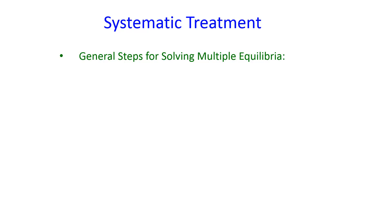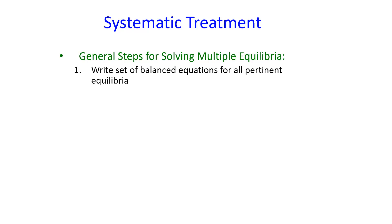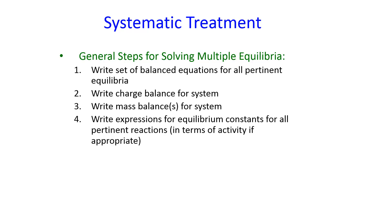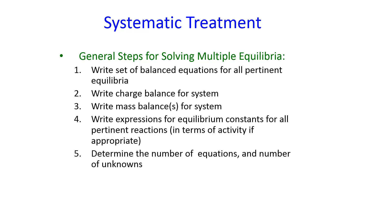So, back to our systematic treatment of equilibria: we've written balanced chemical equations, we've written a charge and a mass balance, and then the last step is to write expressions for the equilibrium constants for all pertinent reactions. Once we have done that, we have to figure out if the number of equations matches or exceeds the number of unknowns, and then we can solve.